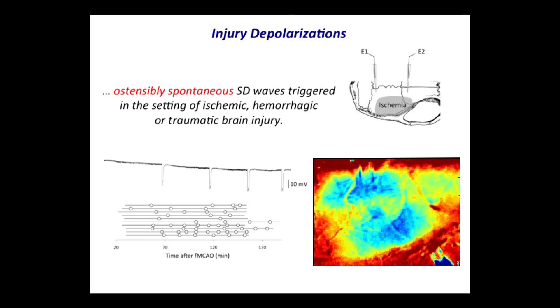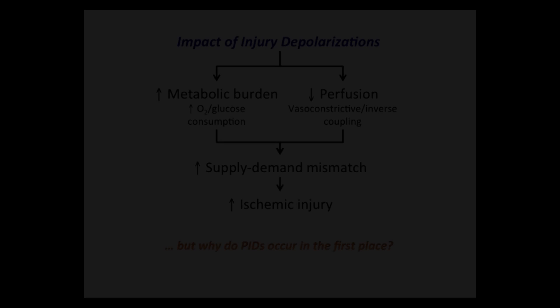During injury depolarizations, there is complete loss of membrane potential in most, if not all, cells in the brain, including neurons and glia. There is massive transmembrane ionic shifts that last up to a minute in otherwise normal brain tissue, and even longer if the blood flow is compromised to the brain, like in the case of a stroke.